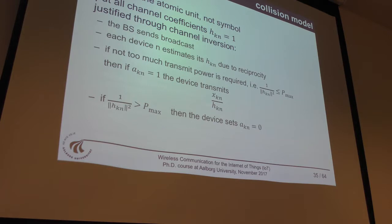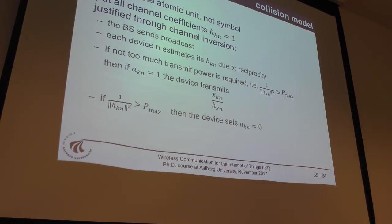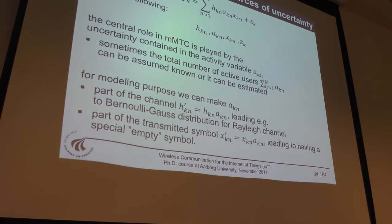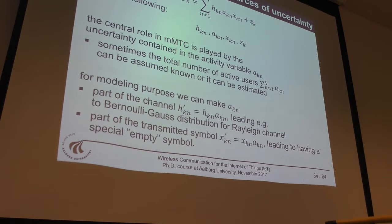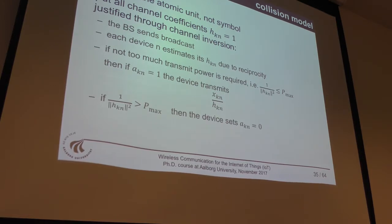The collision model is the simplest: we neglect noise and treat the packet as the atomic unit, setting all channel coefficients equal to 1. The result is a model where: if no user is active you get zero; if one user is active you receive the packet correctly; if two or more users are active you get a collision.